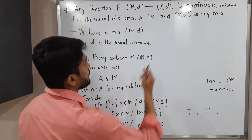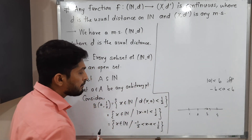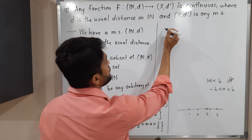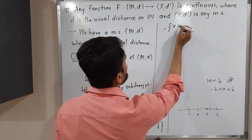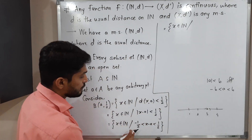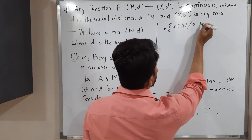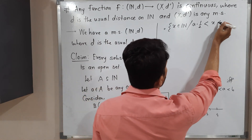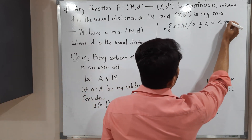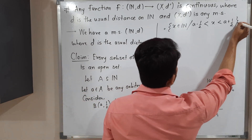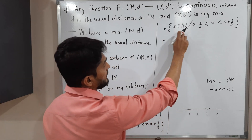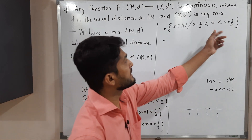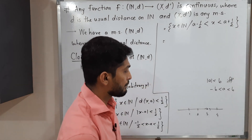To simplify, we add 'a' to all sides. This gives {x ∈ N : a − 1/2 < x < a + 1/2}. That means we are collecting natural numbers which satisfy this condition — those which lie inside the interval (a − 1/2, a + 1/2).